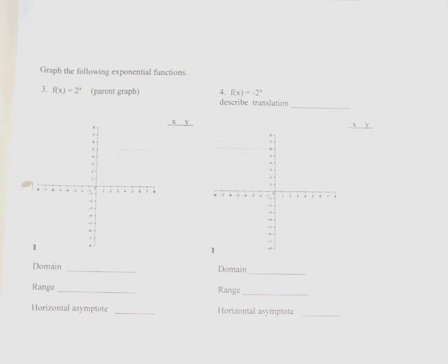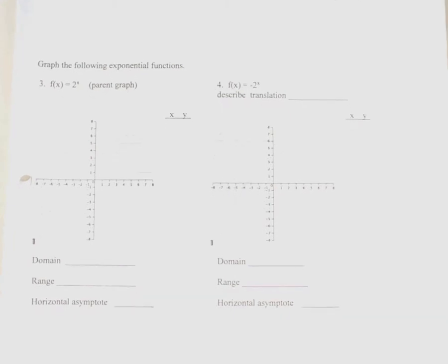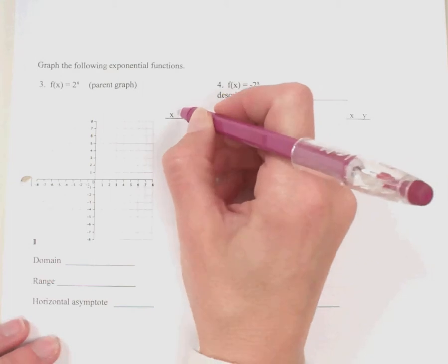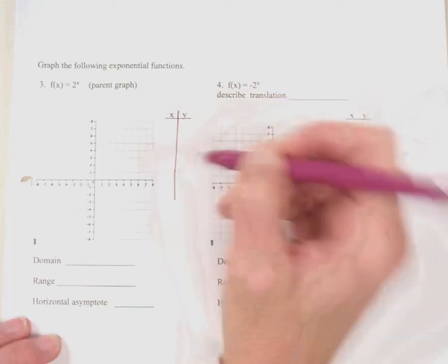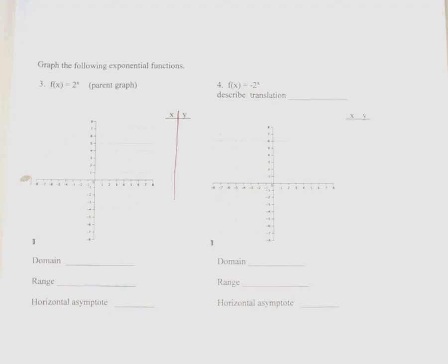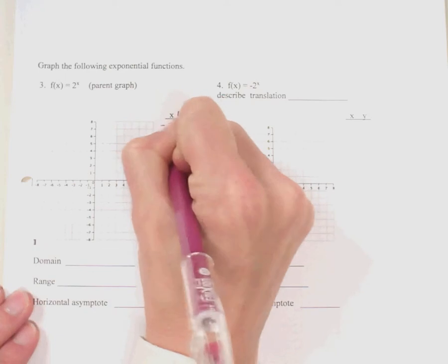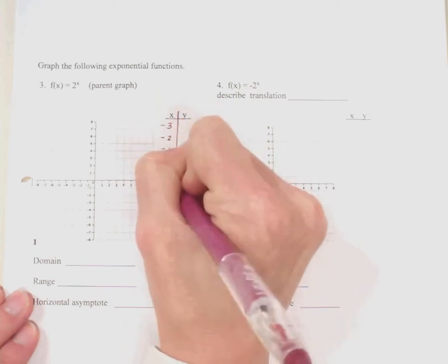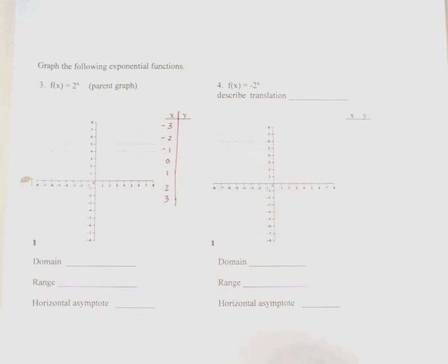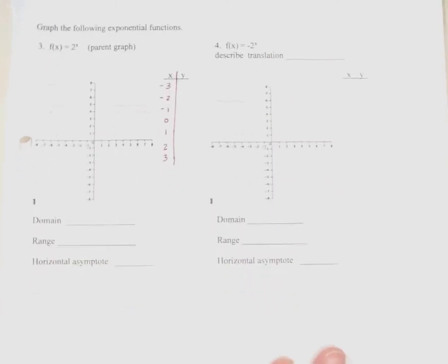Next, we are going to graph exponential functions. Any time we graph, I recommend making a t-chart — choose values for x and get values for y in return. The domain of exponential functions is all real numbers, so I can choose any value for x. Typically I choose some positive numbers, 0, and some negative numbers: negative 3, negative 2, negative 1, 0, 1, 2, and 3. Note that you'll have a four-function calculator, so you'll need to calculate some exponents by hand.